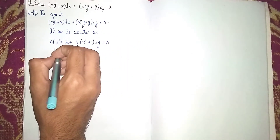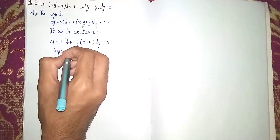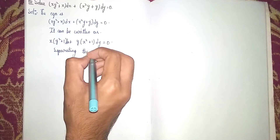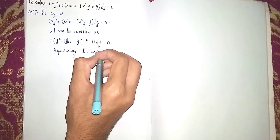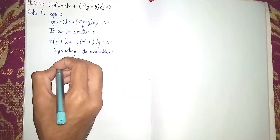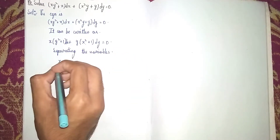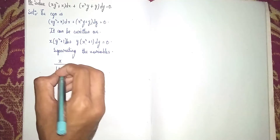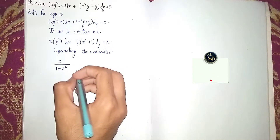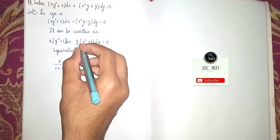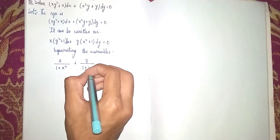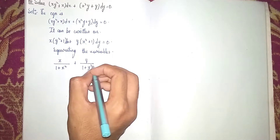Now separating the variables. Sending terms to form a common denominator, we get x divided by (1 + x²) dx plus y divided by (1 + y²) dy = 0.